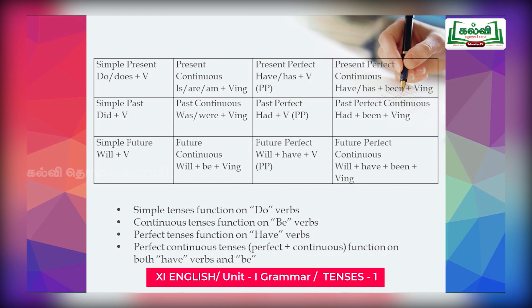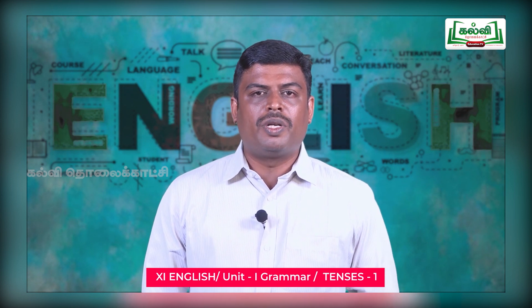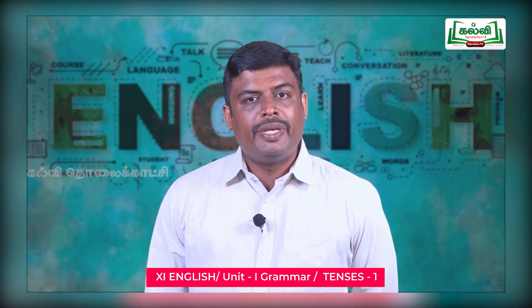Next, present perfect tense. When we come to perfect tense, the first thing to remember is the verb should be in past participle form — that is, the verb should be in its third form. For all perfect tenses, the verb should be in past participle form, just as in continuous tense the verb is in '-ing' form.